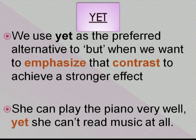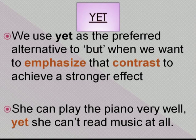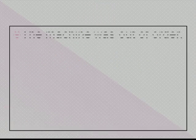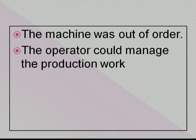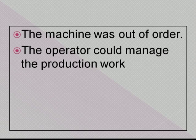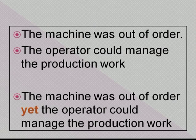Example of 'yet': She can play the piano very well, yet she can't read music at all — 'yet' expresses emphasis and contrast between the two sentences. Another example: 'The machine was out of order. The operator could manage the production work.' These are two opposite ideas, connected in a single sentence using 'yet': The machine was out of order, yet the operator could manage the production work.